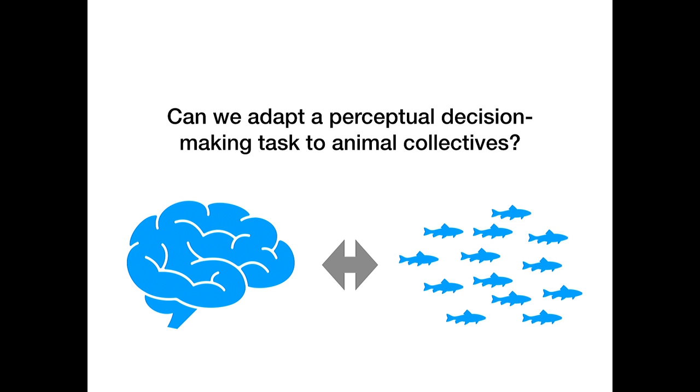So my goal is to adapt this very lucrative system for studying decision-making to animal collectives. Primarily with the goal of using a very well designed experimental procedure to study, to learn something about collective decisions. And my secondary goal is to maybe be able to learn something in general about distributed information processing that might inform something about decision-making in neuroscience.